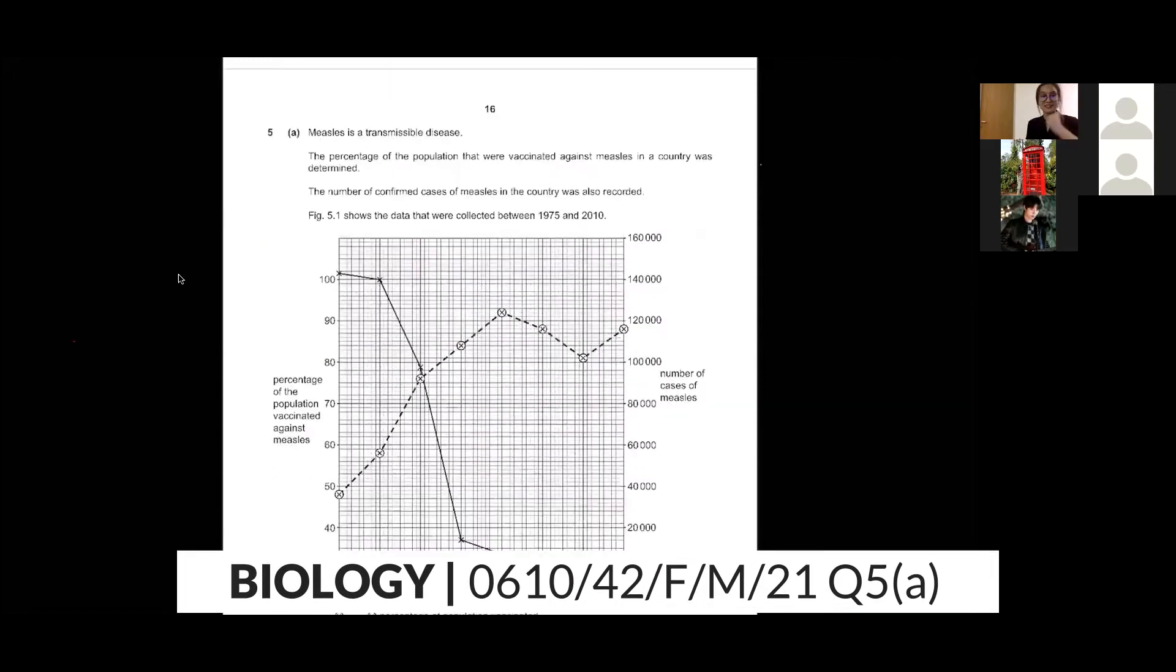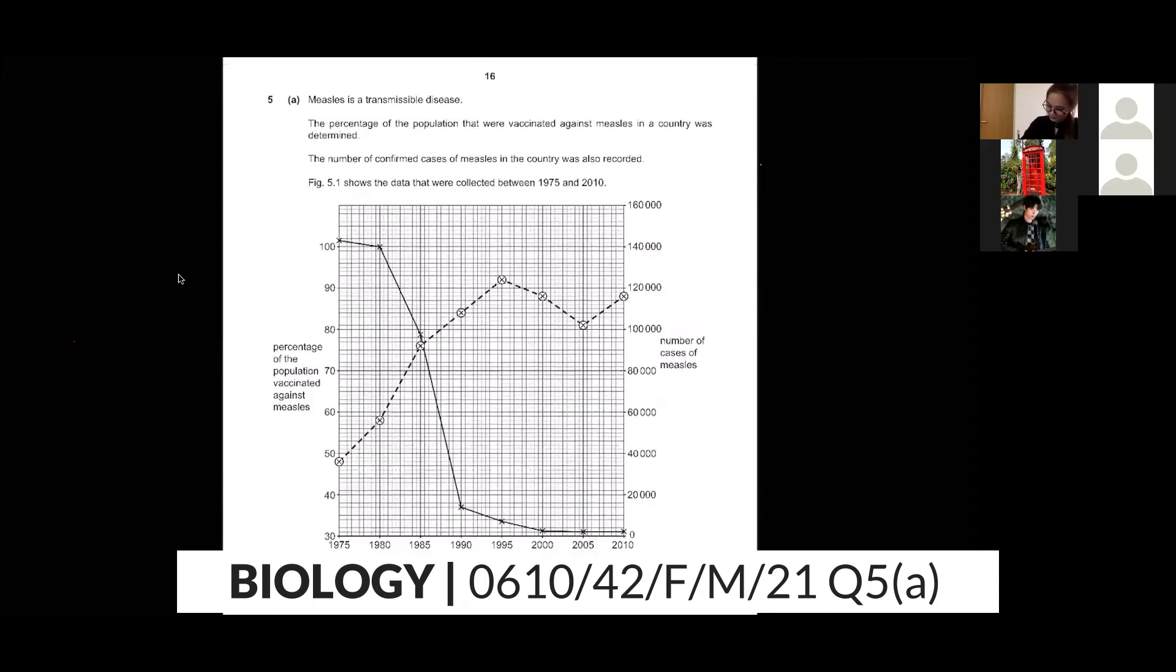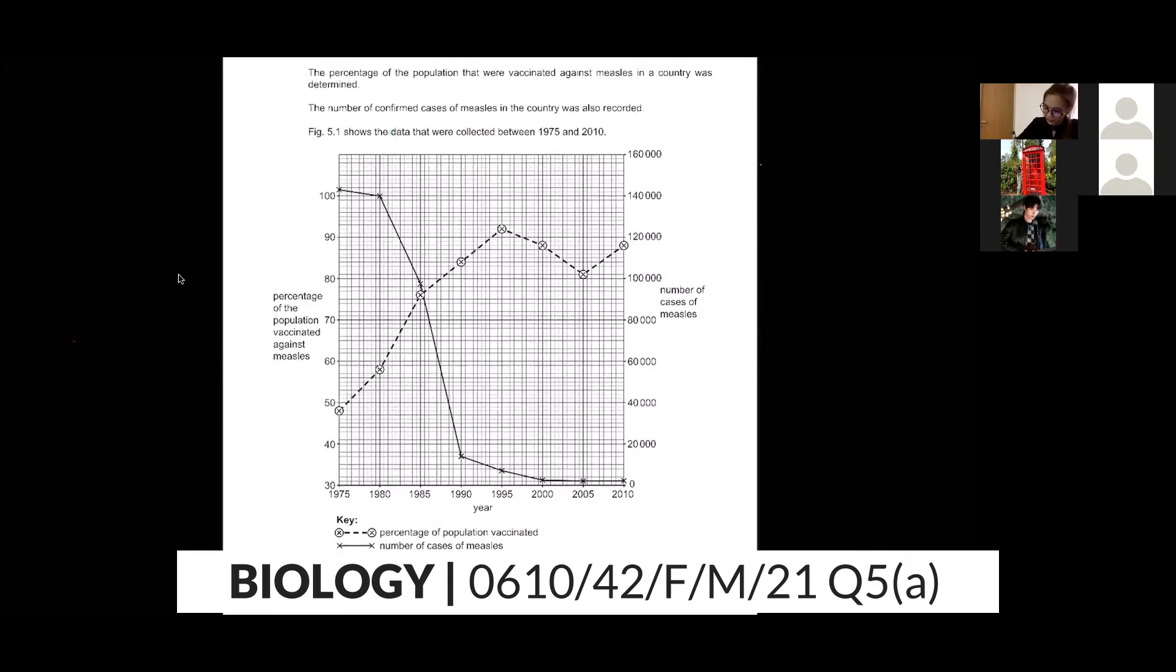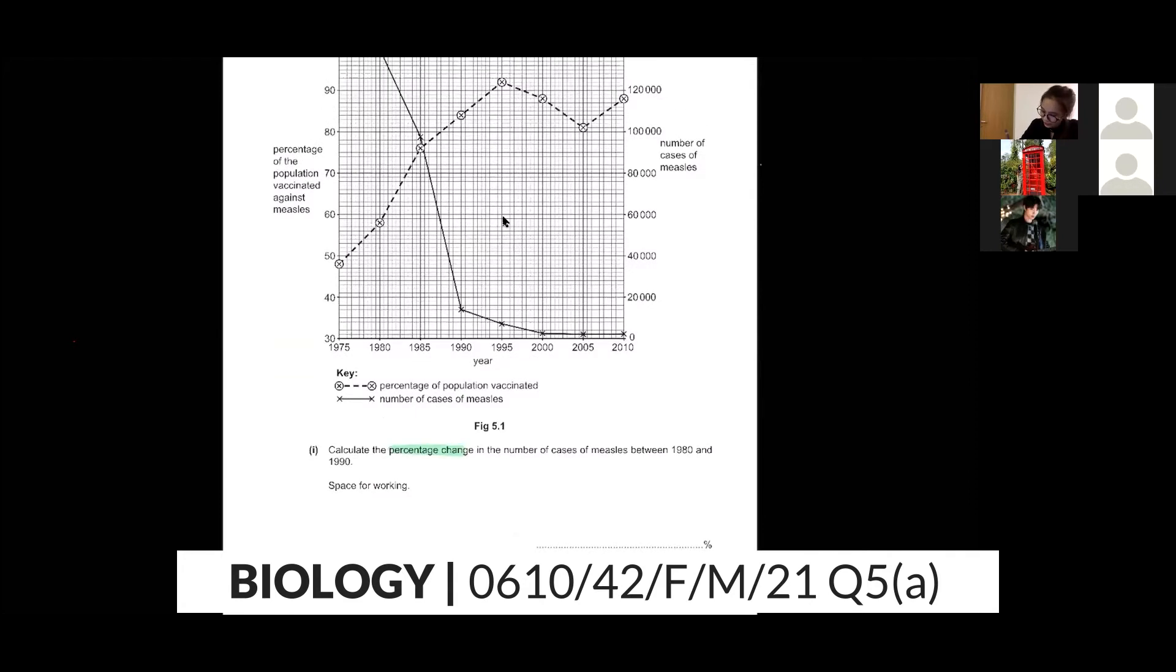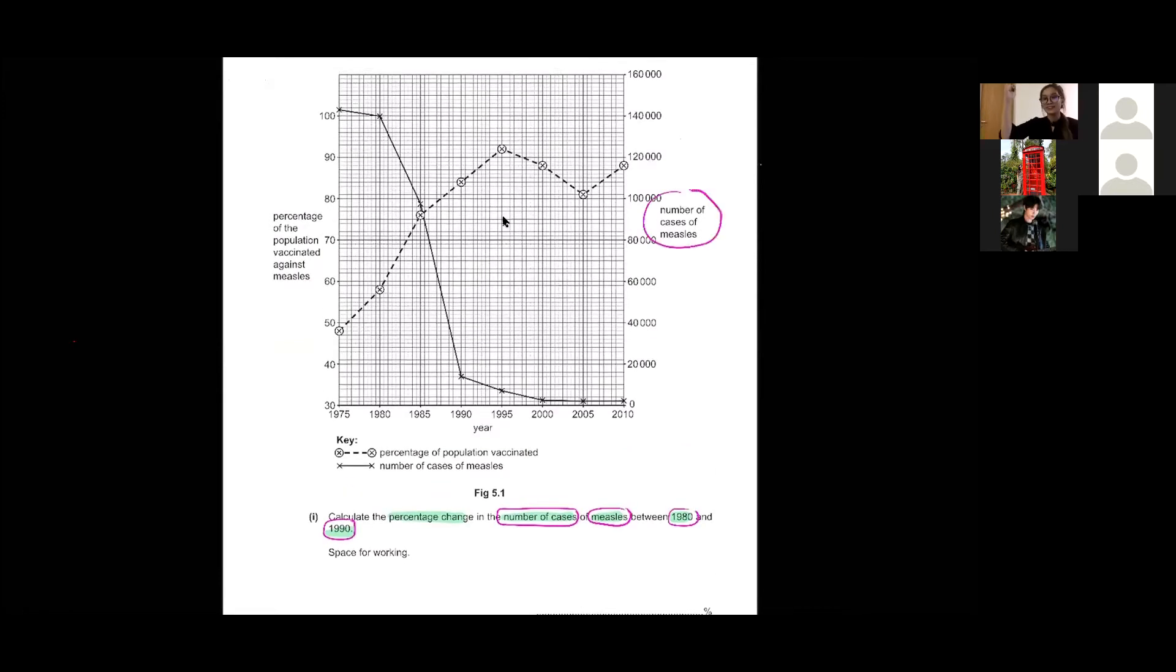Okay, next question. Since you guys mentioned describe and explain, let's go. Measles is a transmissible disease. In this graph it shows you that the data were collected between 1975 to 2010. Calculate the percentage change in the number of cases of measles between 1980 and 1990. I always like to circle or highlight what I want to find so that you can see clearly. The number of cases is on this side, the percentage of population vaccinated is on this side.